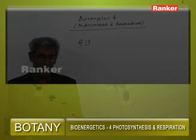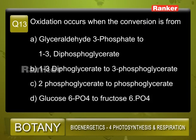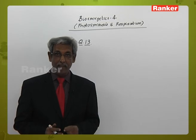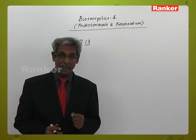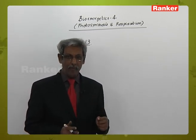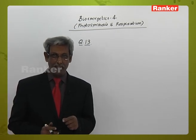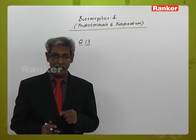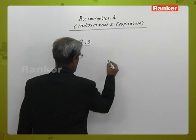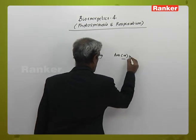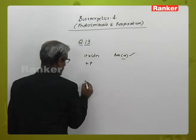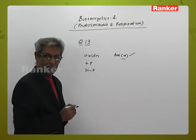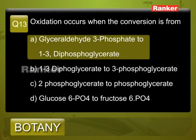Question number 13: Oxidation occurs when the conversion is from — A: glyceraldehyde 3-phosphate to 1,3-diphosphoglycerate, B: 1,3-diphosphoglycerate to 3-phosphoglycerate, C: 2-phosphoglycerate to phosphoglycerate, D: glucose 6-phosphate to fructose 6-phosphate. When glyceraldehyde 3-phosphate is converted to 1,3-diphosphoglycerate, one more phosphorus is added forming a diphosphate. When phosphorus gets added, this process is termed oxidation. Glyceraldehyde phosphate to 1,3-diphosphoglycerate is the right answer. The answer is A.